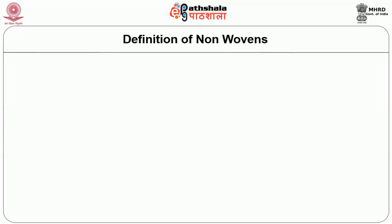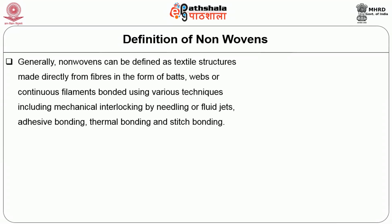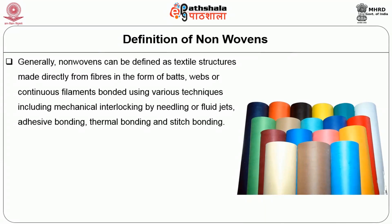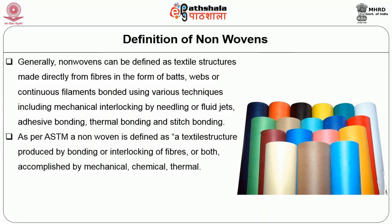Some of the definitions which have been put forward by many organizations: generally, nonwovens can be defined as a textile structure made directly from the fibers in the form of a bat or a web or continuous filaments bonded using various techniques including mechanical interlocking by needling or fluid jets, adhesive bonding, thermal bonding, and stitch bonding. As per the ASTM standards, a nonwoven is defined as a textile structure produced by bonding or interlocking of fibers or both, accomplished by mechanical, chemical, thermal, or solvent means and combinations thereof.